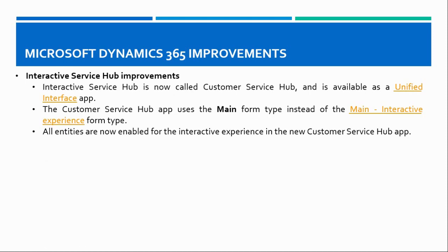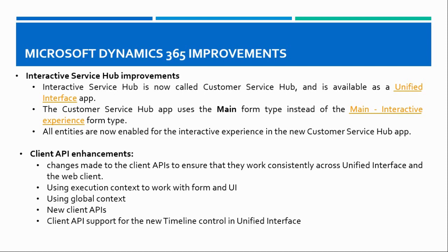Announcements were made on the Interactive Service Hub: it is now called Customer Service Hub and is available as a unified interface app. The Customer Service Hub uses the main form type instead of the main interactive experience form type, and all entities are now enabled for interactive experience in the new app. Client API changes were also made to ensure they work consistently across the unified interface and web client — you now use execution context to work with forms and UI, and utilize global context.